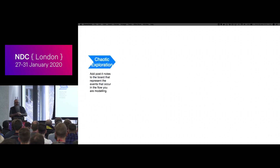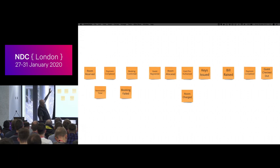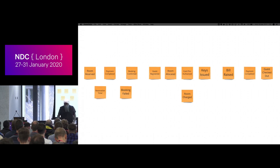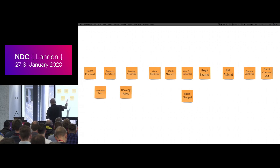What does that look like? First you agree what you're going to model, then you do chaotic exploration — slapping post-it notes onto the board representing events in your sequence. Things like: room reserved, payment complete, booking confirmed, guest registered, room allocated. These represent significant events that occurred during the guest check-in process that we want to record. There's a whole lot of orange post-it notes representing events that have happened in the system.